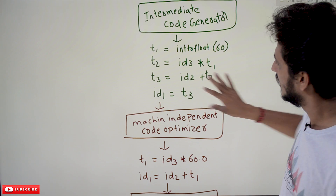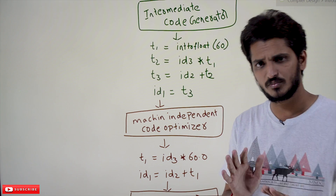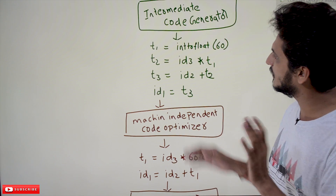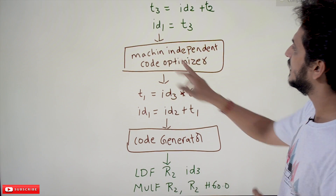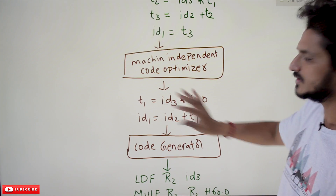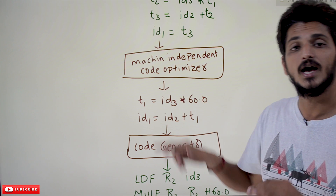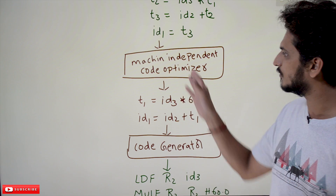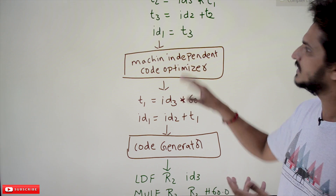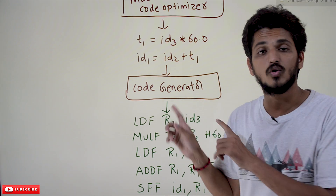This intermediate code is machine independent — it does not belong to any specific machine. The machine-independent code optimizer can reduce the four lines of intermediate code to three lines. That is what optimization means. This optimization step is optional — you don't have to use it; otherwise, the intermediate code is directly given to the code generator. Optimization reduces the code. The optimized code is then given to the code generator.